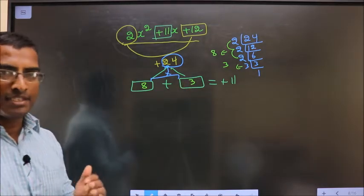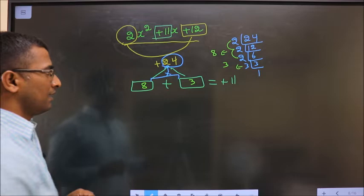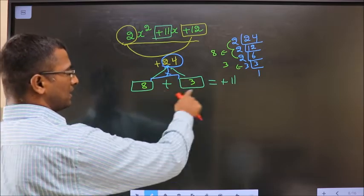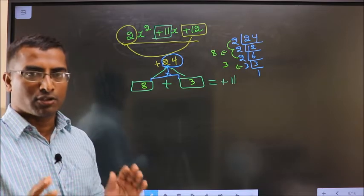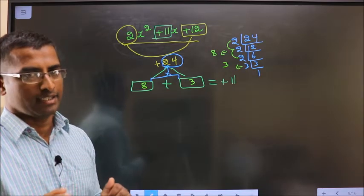Now adjust the signs. Here plus 11, 8 plus 3 is plus 11, 8 into 3 is plus 24. So signs are also adjusted.